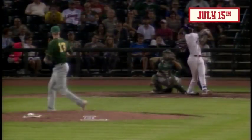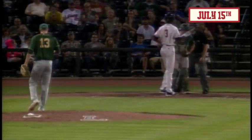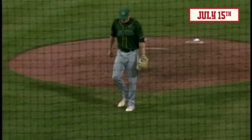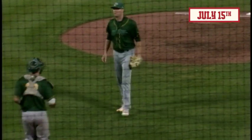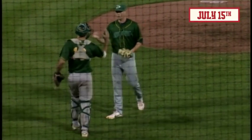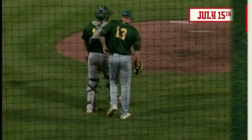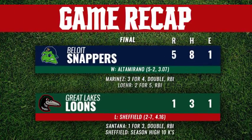The 3-2 is cut on and missed. Strike three swinging. Davis done on a 91 mile per hour fastball, and the Loons have lost their ninth game in a row. They fall to the Beloit Snappers 5-1 tonight.